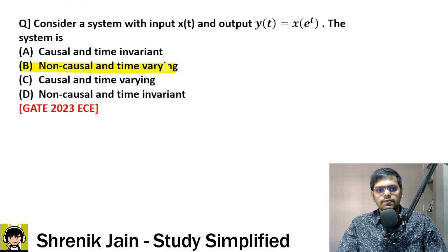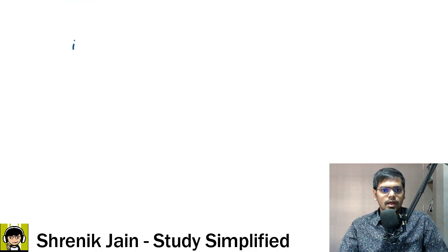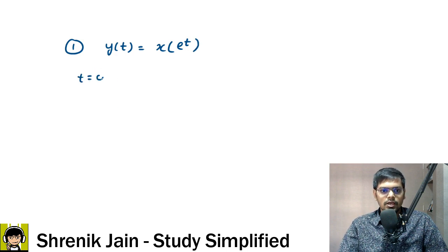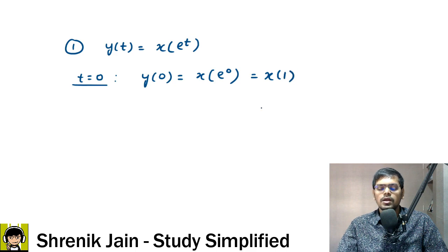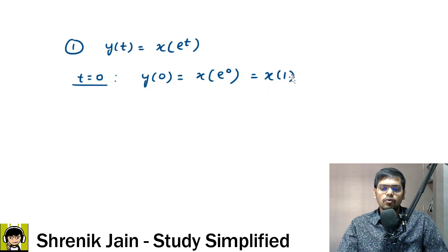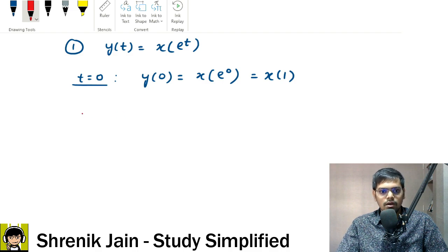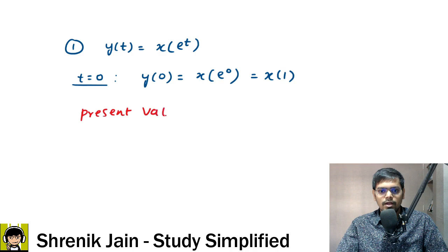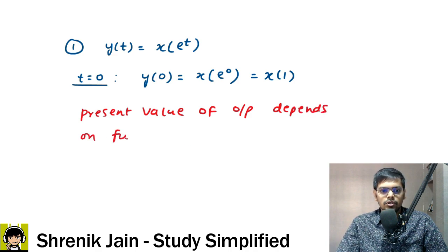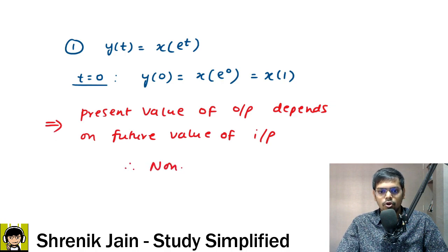Let us see why. The first step is checking causal vs non-causal. We have y(t) = x(e^t). When I substitute t = 0, the equation becomes y(0) = x(e^0) = x(1). This means our present output y(0) is depending on the future input. So when the output depends on future input, this is the case of a non-causal system.